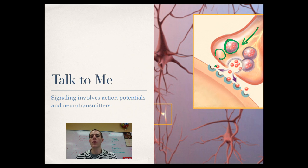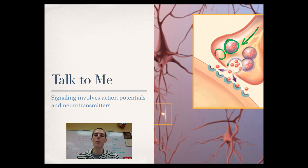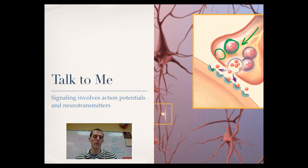Those neurotransmitters then bind to special receptors on the membrane across the way. The membrane across the way is called the post-synaptic membrane. Those neurotransmitters bind to that post-synaptic membrane and initiate some sort of response.